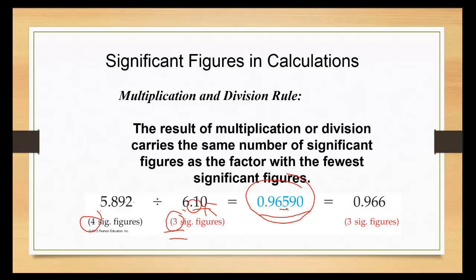That means we're going to round it off to the three significant figures. This first zero does not count because it's a leading zero. So 965 are the numbers I'm going to be looking at. Because the next number is a nine, I'm going to round it up to 0.966.